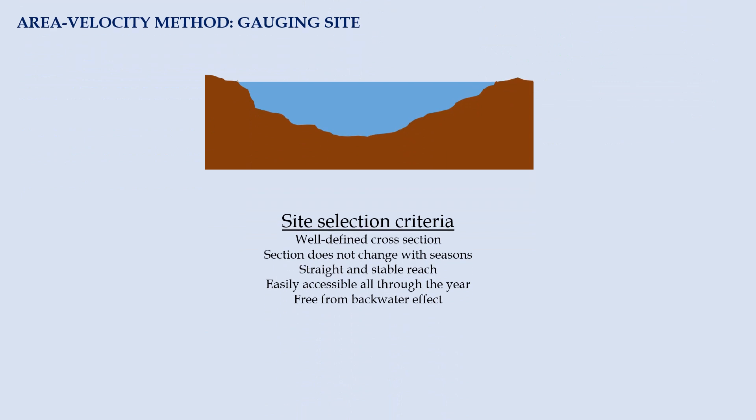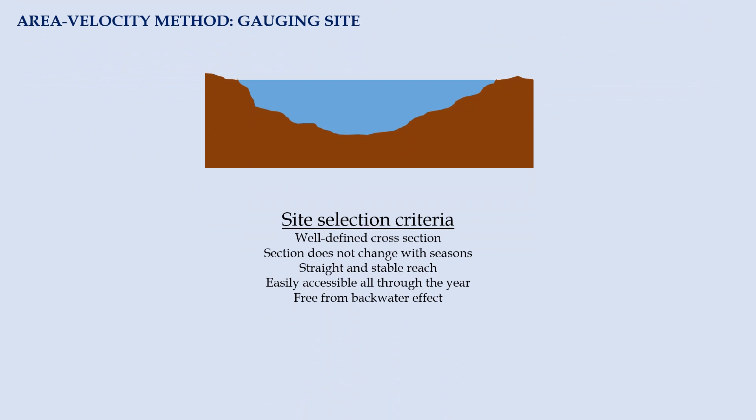Prior to the velocity measurement, we need to find the right gauging site for the river we want to measure. A suitable site should fulfill the following criteria. First, the cross section should be well defined and does not change in various seasons. The site should be in a straight and stable reach while being easily accessible all through the year. On top of that, the location should be free from any backwater effect.